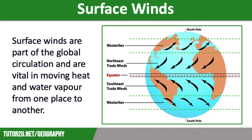Wind is the movement of air from high pressure to low pressure. Surface winds are part of global atmospheric circulation and are vital in moving heat and water vapour from one place to another. Surface winds blowing from the tropics to the equator are dry, affecting the climate of the countries they blow over. Surface winds are also known as trade winds, as they were used to determine where sailing ships could travel easily to trade.